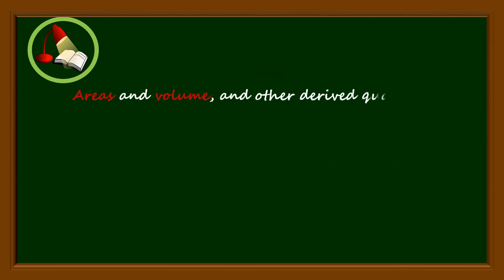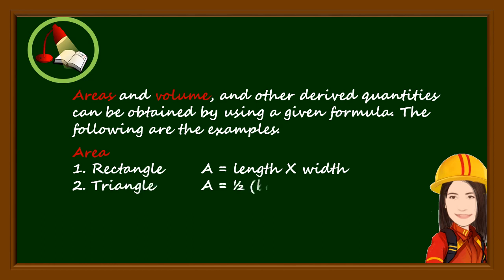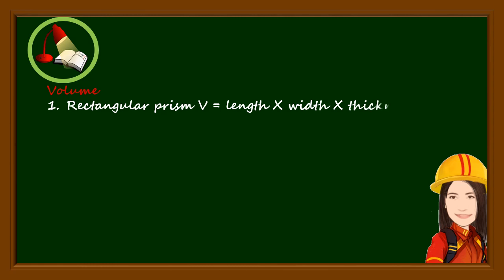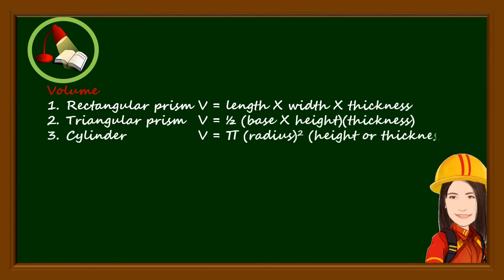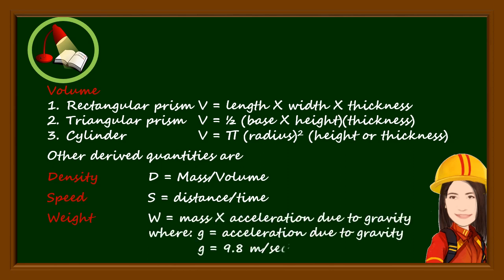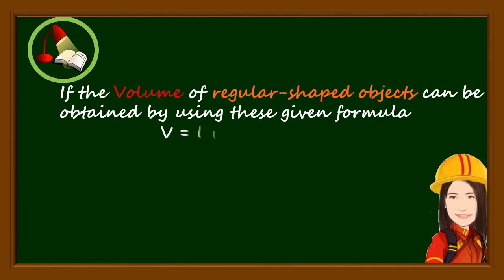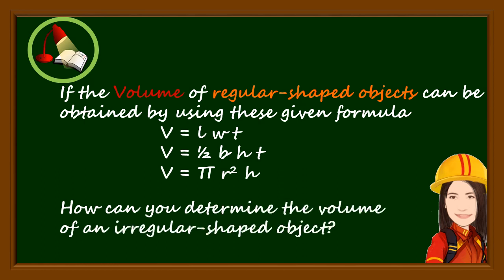Area, volume and other derived quantities can be obtained by using a given formula. The following are the examples. If the volume of regular shaped objects can be obtained by using these given formulas, how can you determine the volume of an irregular shaped object?